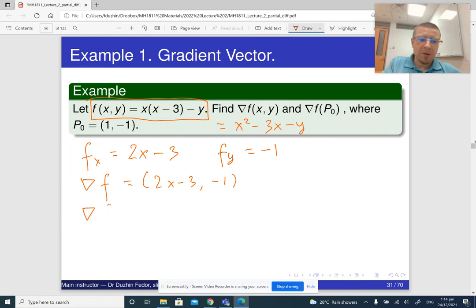The gradient vector of f evaluated at the point (1, -1) is basically the same thing. Now we need to substitute x equals 1 and y equals negative 1 into this expression. So we get 2 times 1 minus 3, which is negative 1, and negative 1. So negative 1, negative 1.